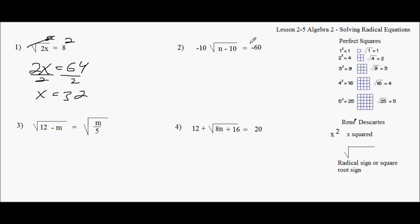Now here, I have, before I square, I have to get rid of this. And this is a negative 10 times. If there's nothing in here, we assume a multiply. So I'm going to divide by negative 10. And I get the square root of n minus 10 equals 6. Because negative 60 divided by negative 10 is positive 6. Square both sides. This cancels. n minus 10. I get what's underneath. That's the trick. That's the big trick. Equals 36. Add 10 to both sides. And I get n equals 46.